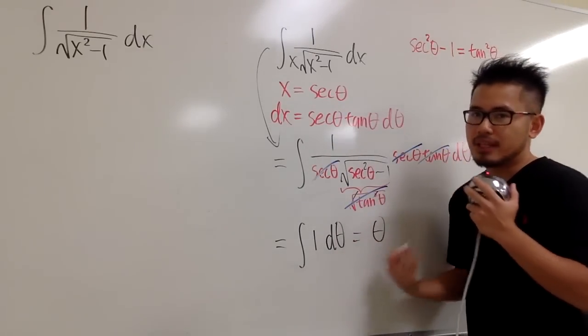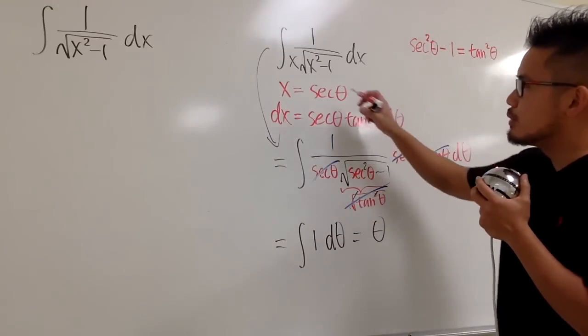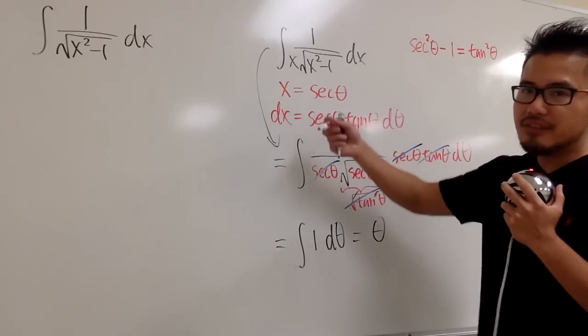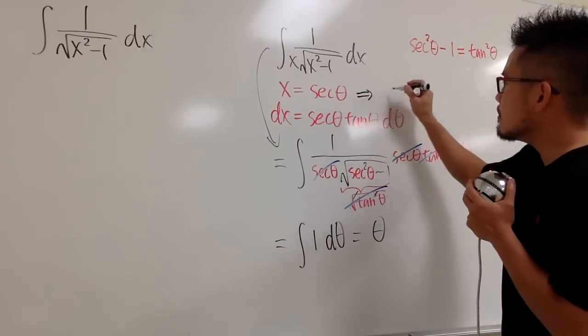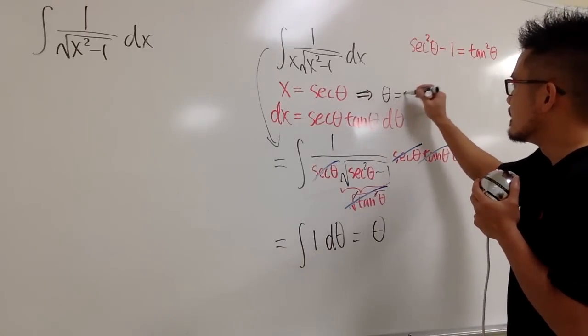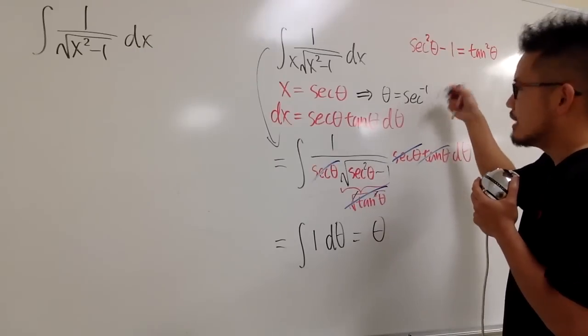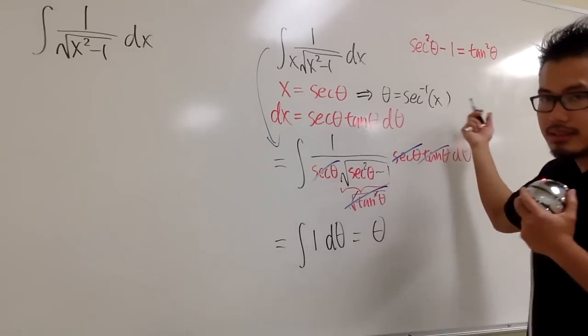And because I don't have theta, there's no other trig functions that I'm playing around with. Therefore, I'm just going to look at this and take the inverse of secant on both sides. This is the same as saying theta is the inverse secant of x. Like this. And then we are done.